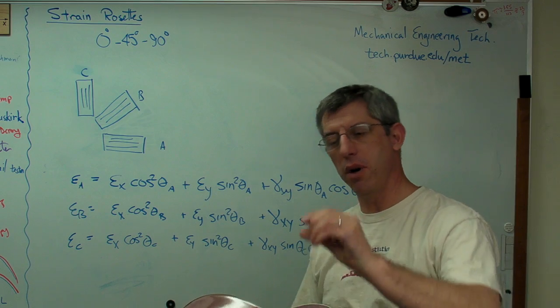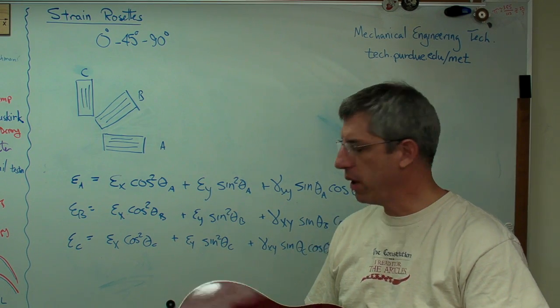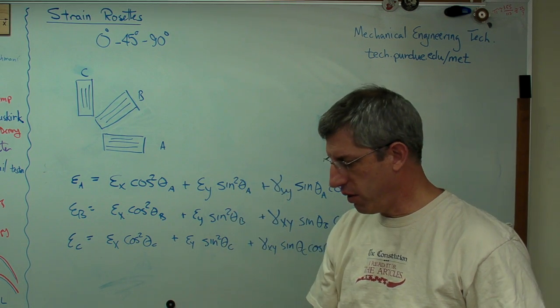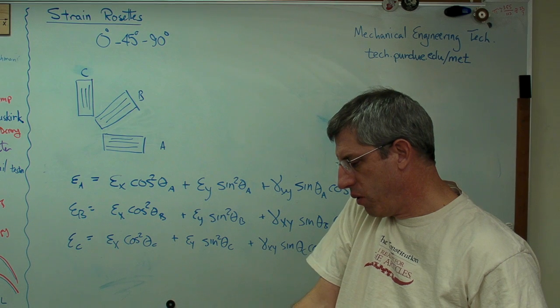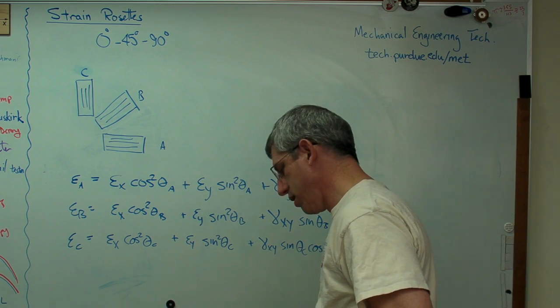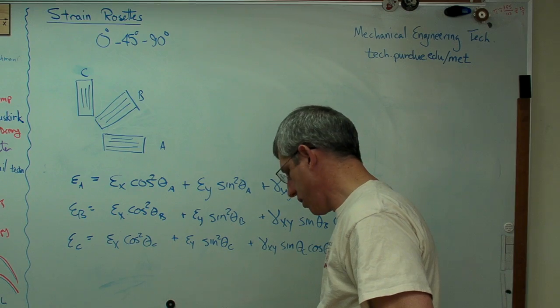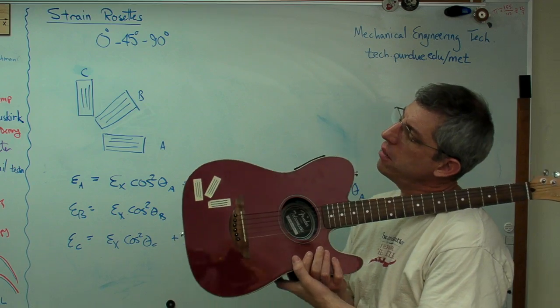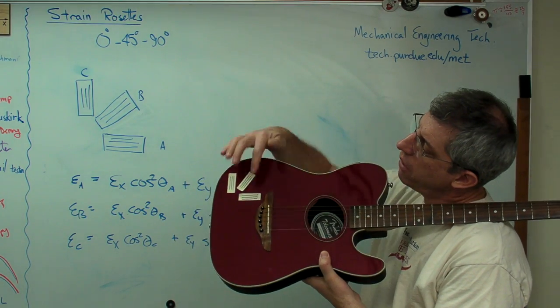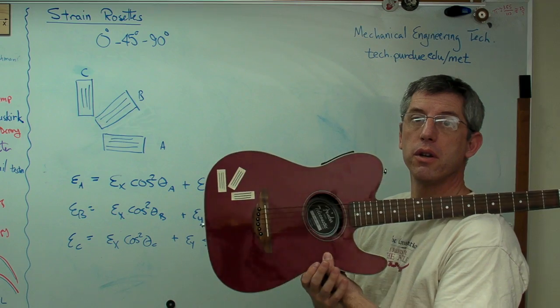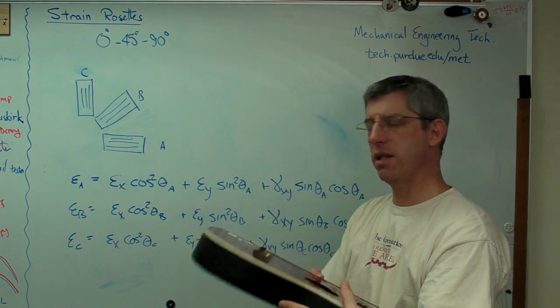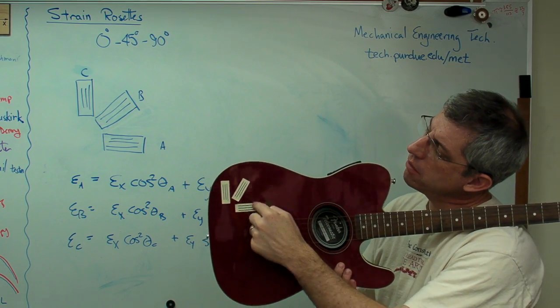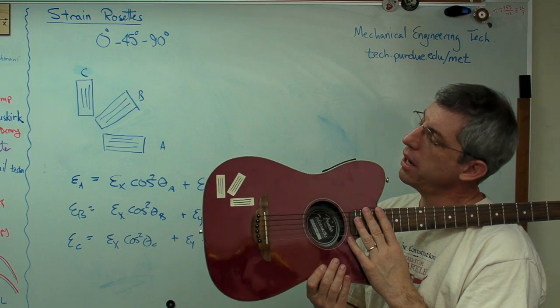Now regular strain gauges are really small, they may be that big. Hard to show you on a video here. So I cut some out of post-it notes here. This is an imaginary strain gauge. So let's say I put one gauge right there, and one gauge right there, and one gauge right there. So there's my imaginary strain rosette made out of big post-it note strain gauges. Now I made this at 0, 90, and 45 for a very good reason. 45? Yeah, that's pretty close. 0, 90, and 45 because I want the angles between the gauges to be fairly large. And I'll tell you why here in a second.